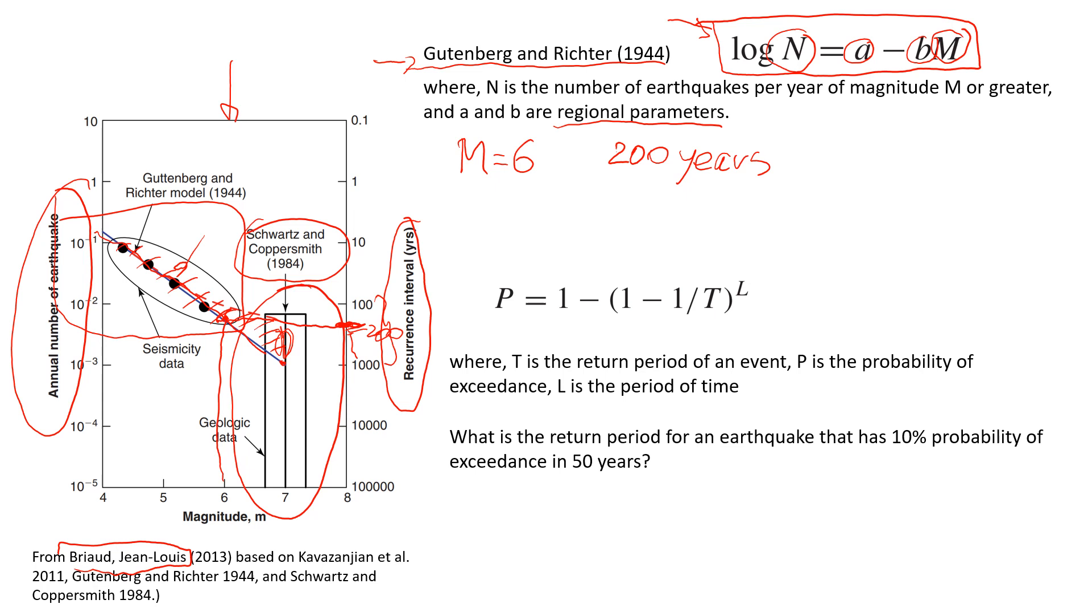And now let's look at probabilities. So how we can use probabilities, and how we can also estimate the return period of this particular event or earthquake. So you see that P here in this formula is probability, and T is the return period, and usually we use it in years. And L is the period of time. So L is going to be in years.